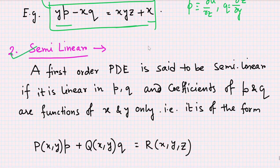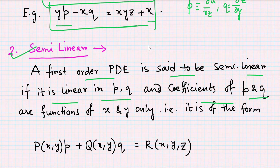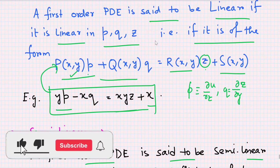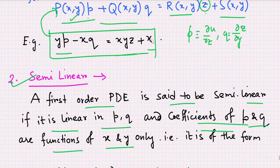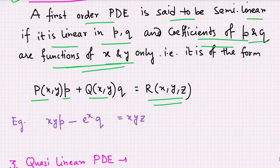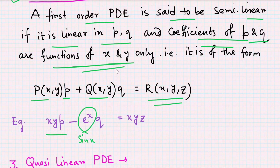A first-order PDE is said to be semi-linear if it is linear in p and q, and the coefficients of p and q are functions of x and y only. It is of the form: P(x,y)·p + Q(x,y)·q = R(x,y,z). The key difference from the linear case is that the right-hand side R can depend on z, while the coefficients of p and q are restricted to functions of x and y only. For example: (sin x)·p + (cos x)·q = xyz.